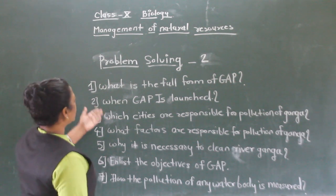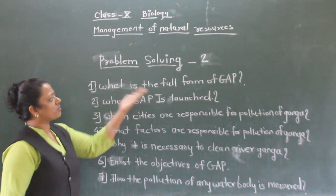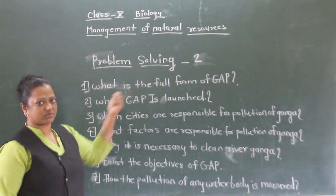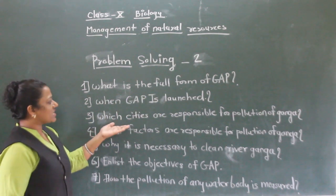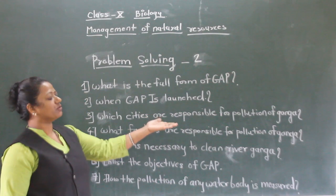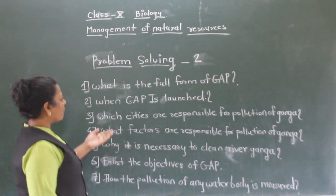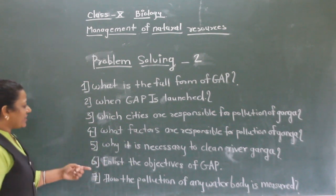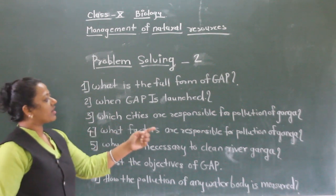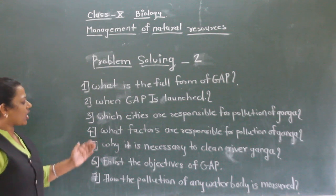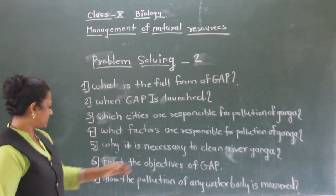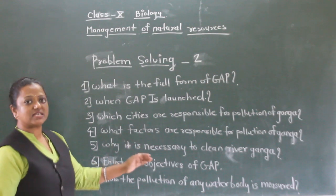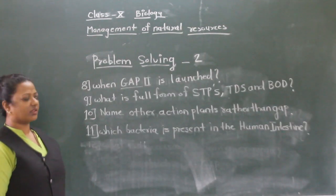This is the second period of problem solving. The first question is: what is the full form of GAP? When was GAP launched? Which cities are responsible for pollution of Ganga? What factors are responsible for pollution of Ganga? Why is it necessary to clean river Ganga? Enlist the objectives of GAP. How is the pollution of any water body measured?